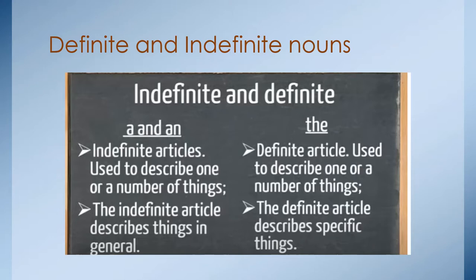Okay, definite and indefinite noun. Right here we have the meaning and the way that you can use it. I divided it in two. Because it's important to know about the articles. Let's talk about A and AN. It's indefinite articles used to describe one or number of things. The indefinite article describes things in general. The difference is THE is a definite article used to describe one or a number of things. The definite article describes specific things.